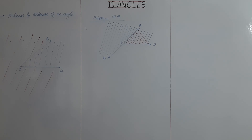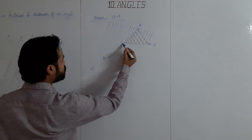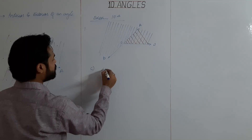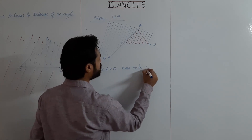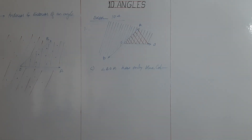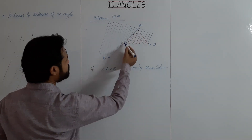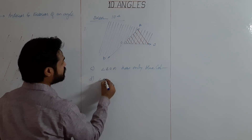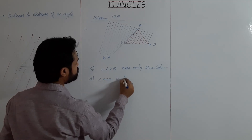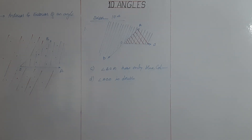Next, name the portion which has only blue color. The portion with only blue shade is angle BOA. Name the portion which is doubly shaded — both blue and red. The doubly shaded portion is angle AOD.